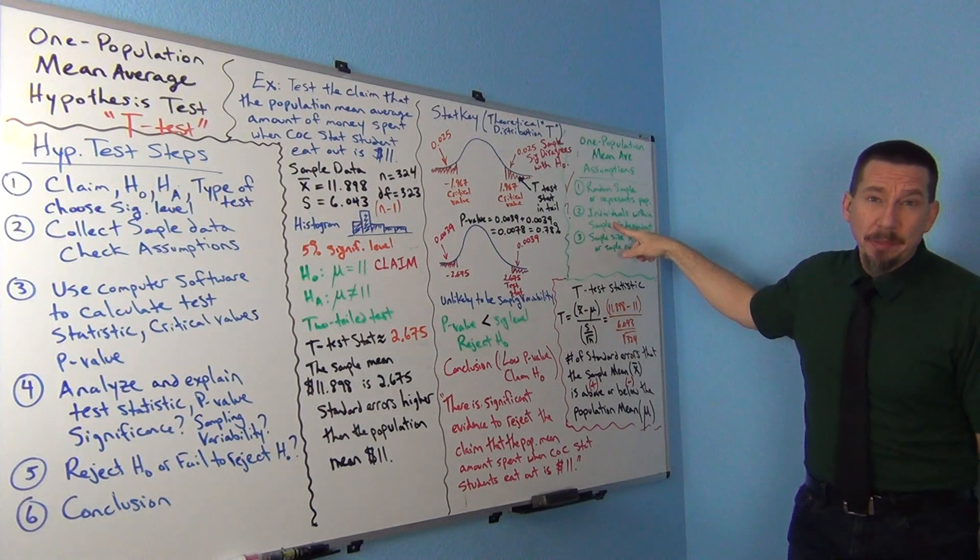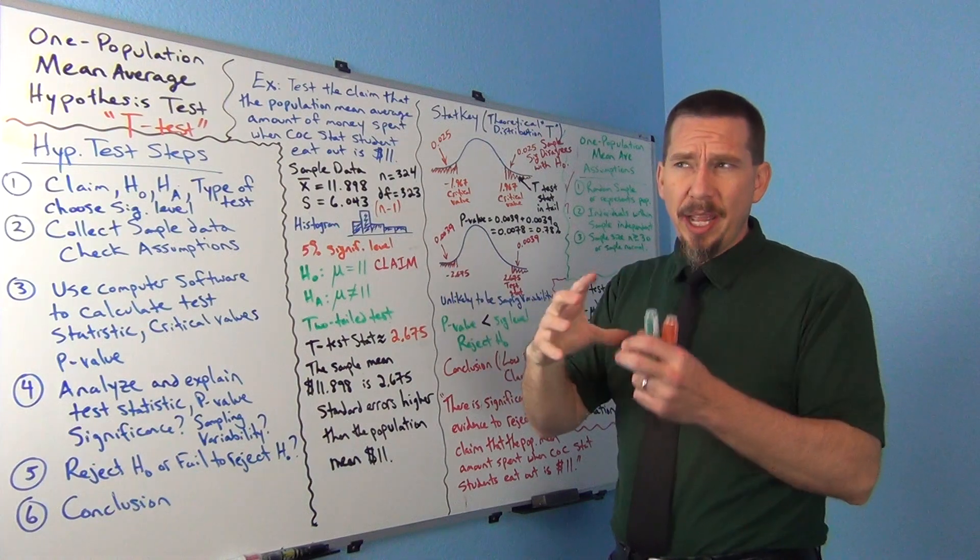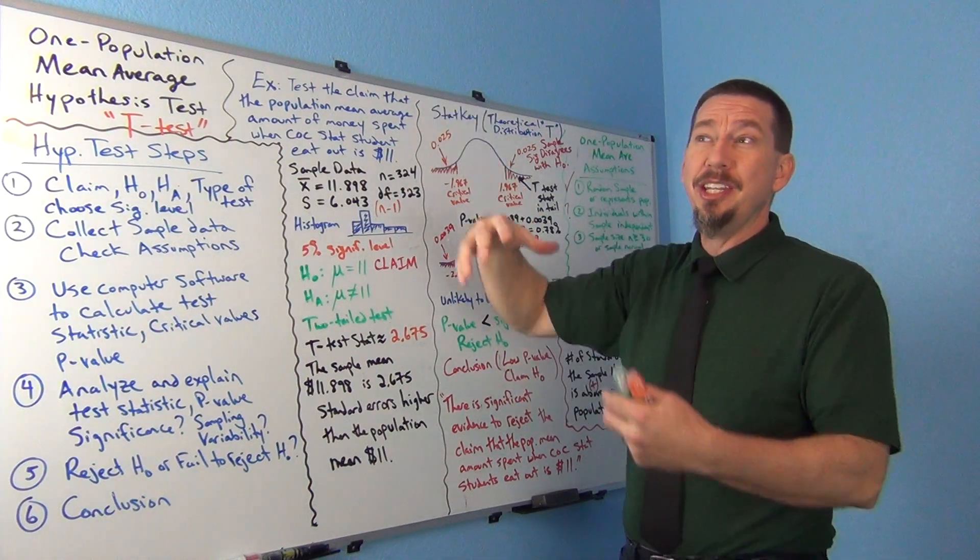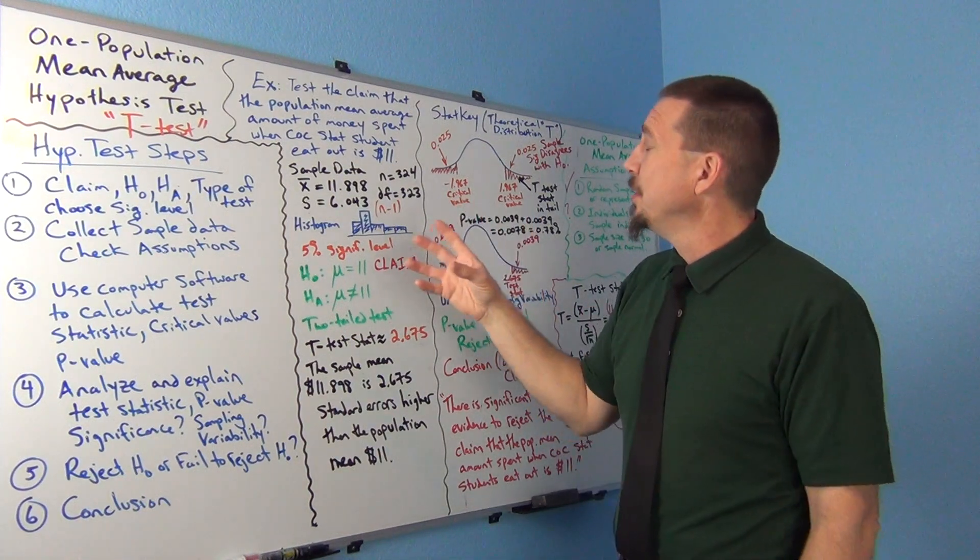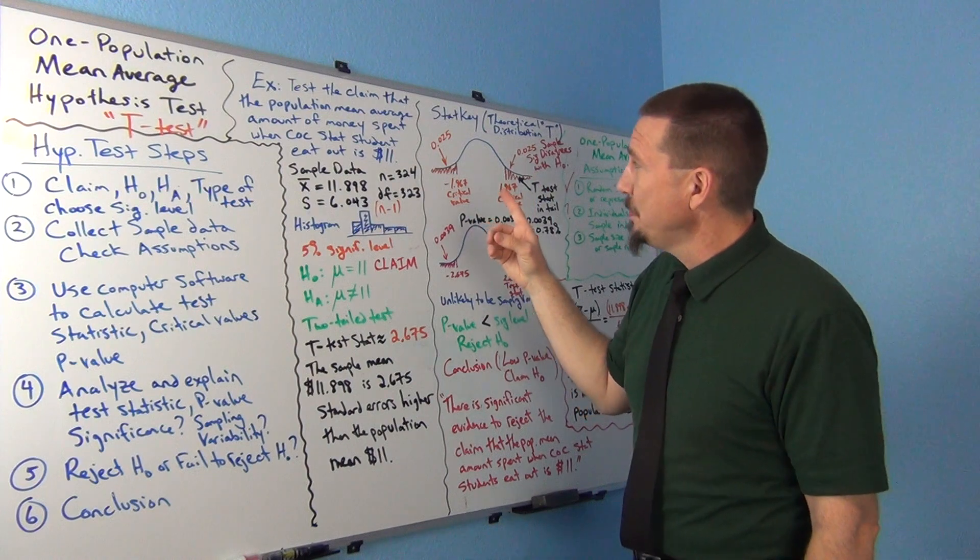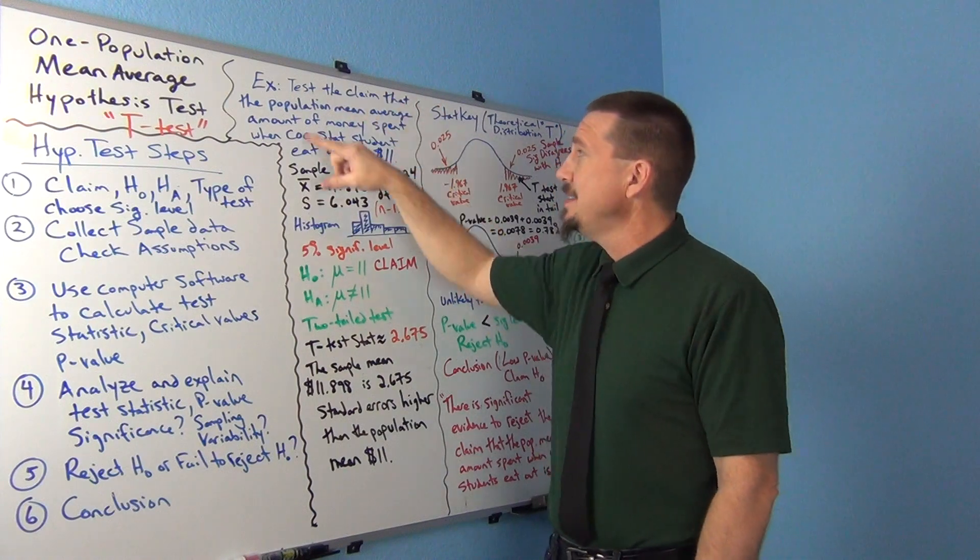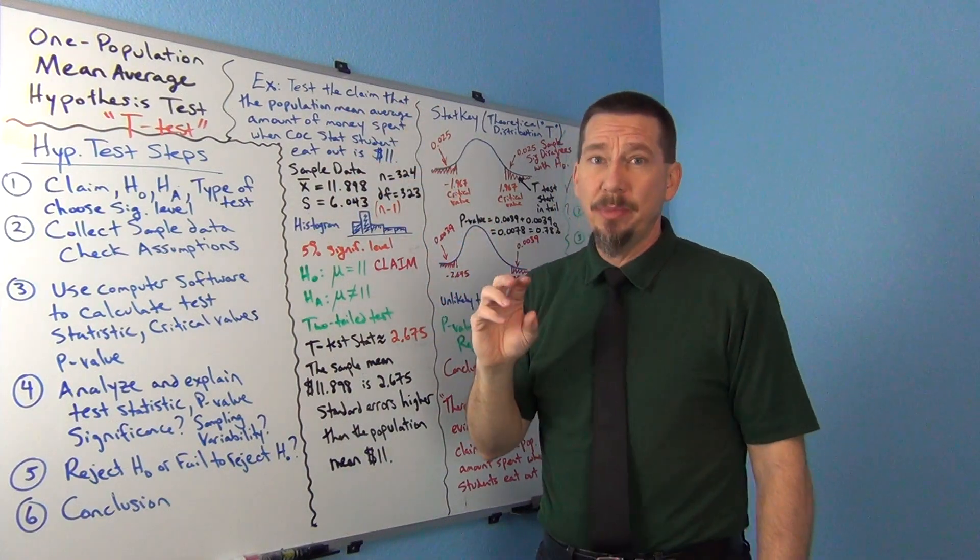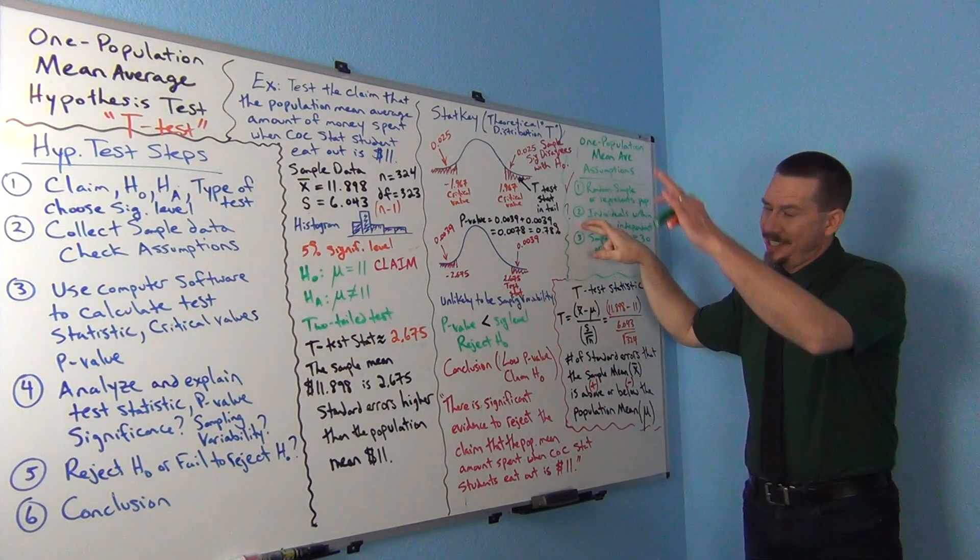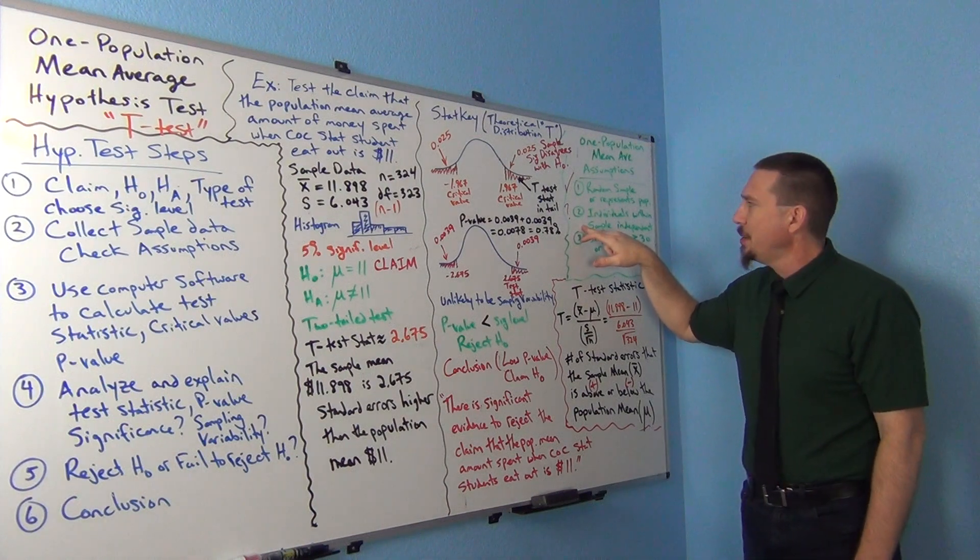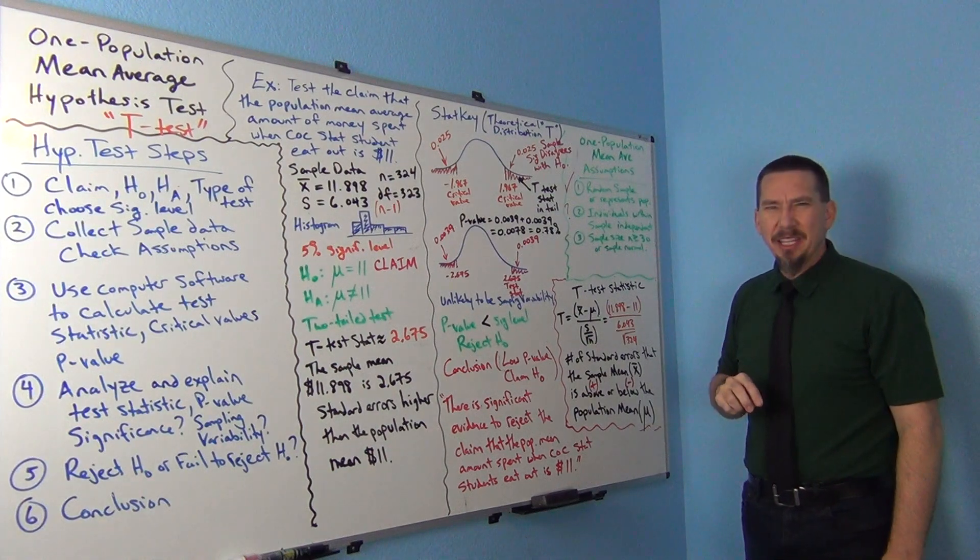The hardest one always is the independence requirement. What we usually said is if you have a small random sample from a large population, then usually it's going to pass independence. You're not going to accidentally get people that are related to each other. This, however, because it wasn't a random sample, and stat students may come from the same classes, they may be friends, they may eat out together. That could be a problem. So, we're not sure about that independence. I'm going to go ahead and assume just for the sake of doing the test that it did meet this independence requirement. Though, I'm not totally set on that. Independence is always something that we have to kind of think about.